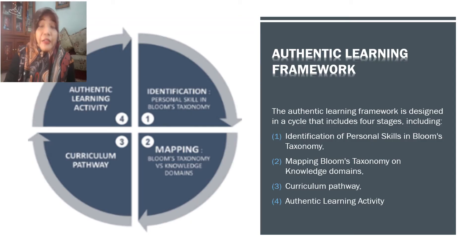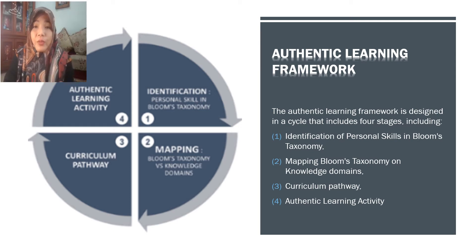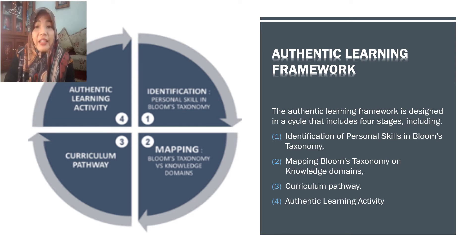The authentic learning framework proposed in this study is designed as a cycle that includes four stages: first, identification of personal skills in Bloom's taxonomy; second, mapping Bloom's taxonomy on knowledge domains; third, curriculum pathway; and fourth, authentic learning activity.